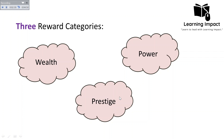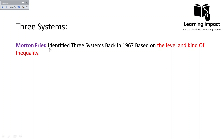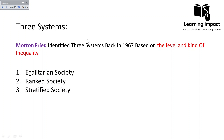Morton Fried identified three systems in 1967 based on the level and kind of inequality. He considered what kind of inequality exists in society and what is the level of that inequality, and classified world societies into three major systems: the egalitarian society, rank society, and stratified society. Before looking into each, we need to examine Fried's major principles and assumptions for this classification.